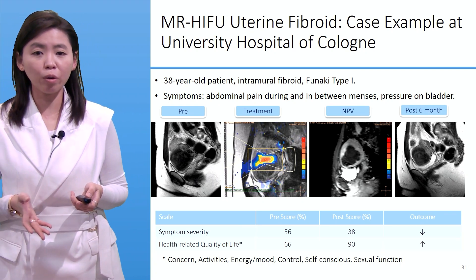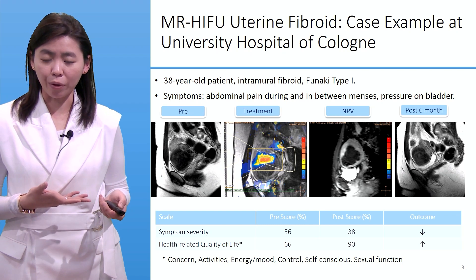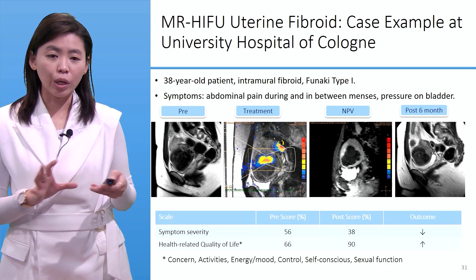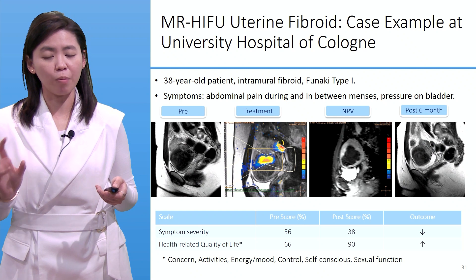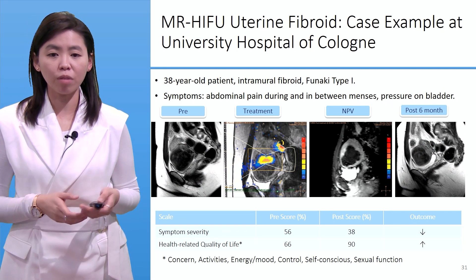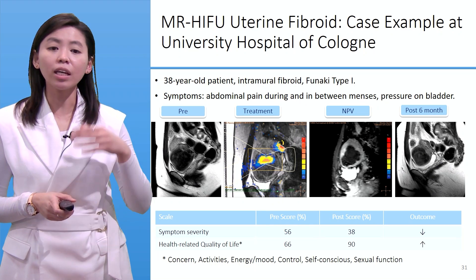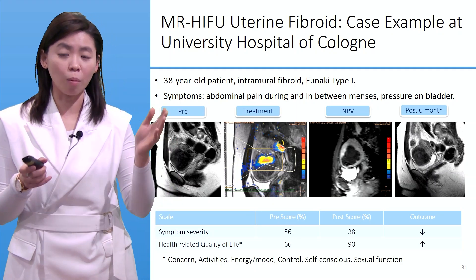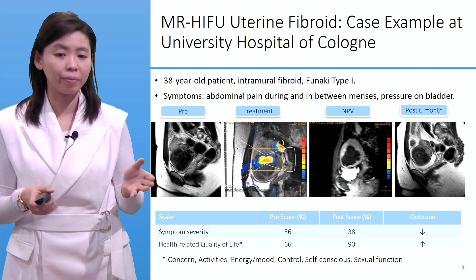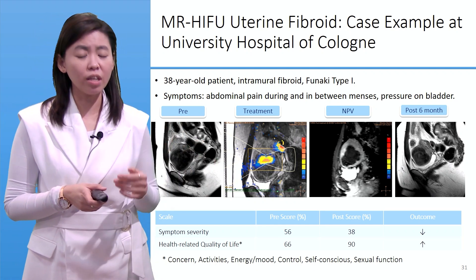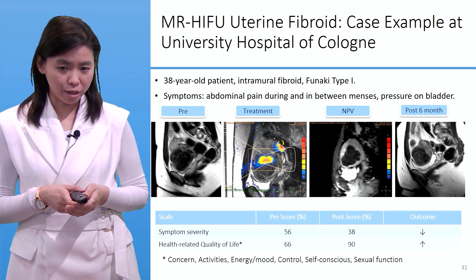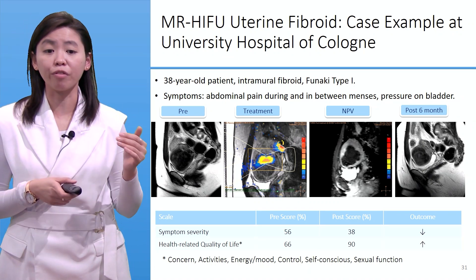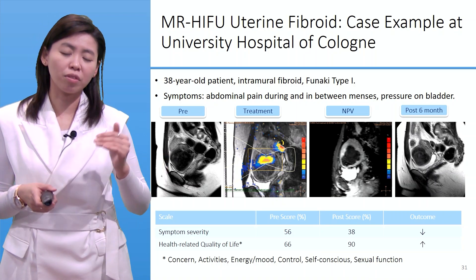Let's look at a case example from our hospital in Cologne: a 38-year-old patient with an intramural fibroid, Funaki type 1, experiencing abdominal pain during and between menses. The images show the fibroid before treatment, temperature increase at the focus spot during treatment, and a contrast-enhanced MR image acquired immediately after to assess non-perfused volume. At six months follow-up there is a visible volume reduction. The symptom severity score decreased from 56% before treatment to 38% after.